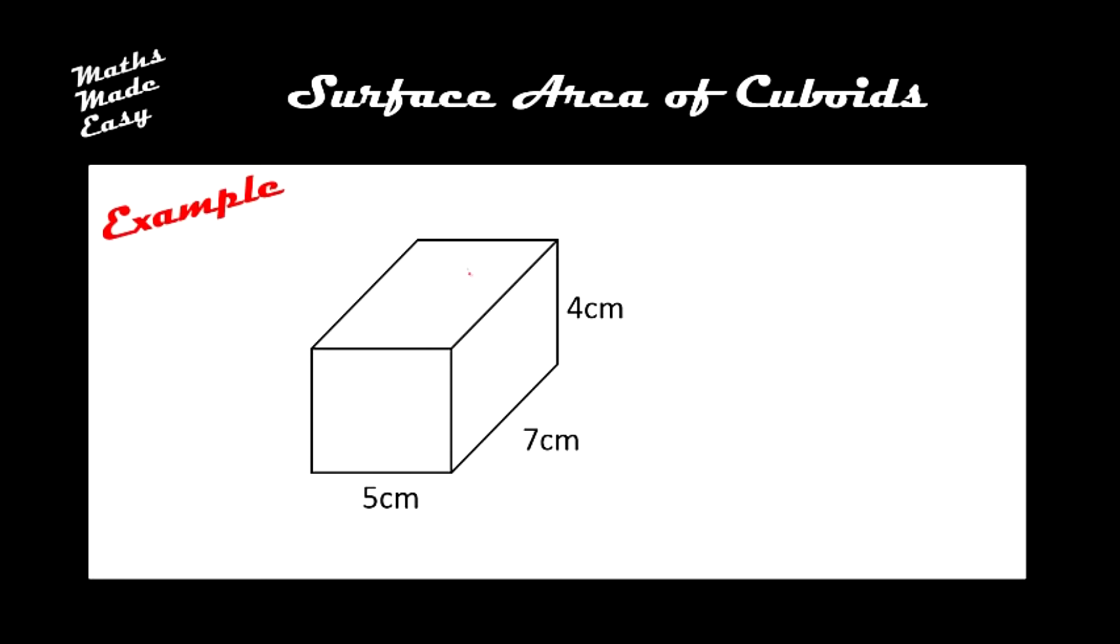In this video we're going to look at how you calculate the surface area of a cuboid. So here we have a cuboid, it's got its 6 faces and we need to find the surface area of it. The surface area of a shape is the area of all of the faces of that shape, all of the surfaces.